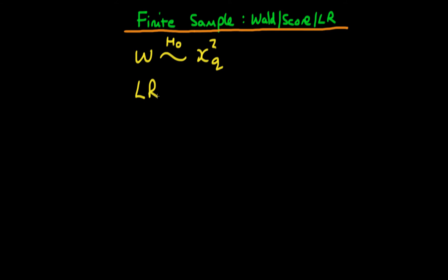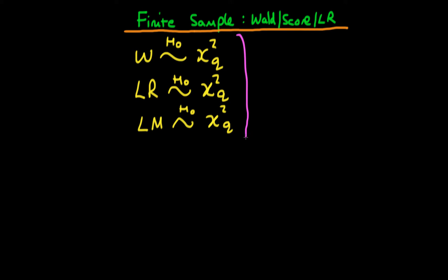Similarly, we know that the likelihood ratio statistic, under H0 being true, is also chi-squared with q degrees of freedom. And finally, the LM statistic, under H0 being true, is also chi-squared distributed with q degrees of freedom. To reiterate, each of these properties only holds asymptotically — in the circumstance where the sample size tends to infinity.